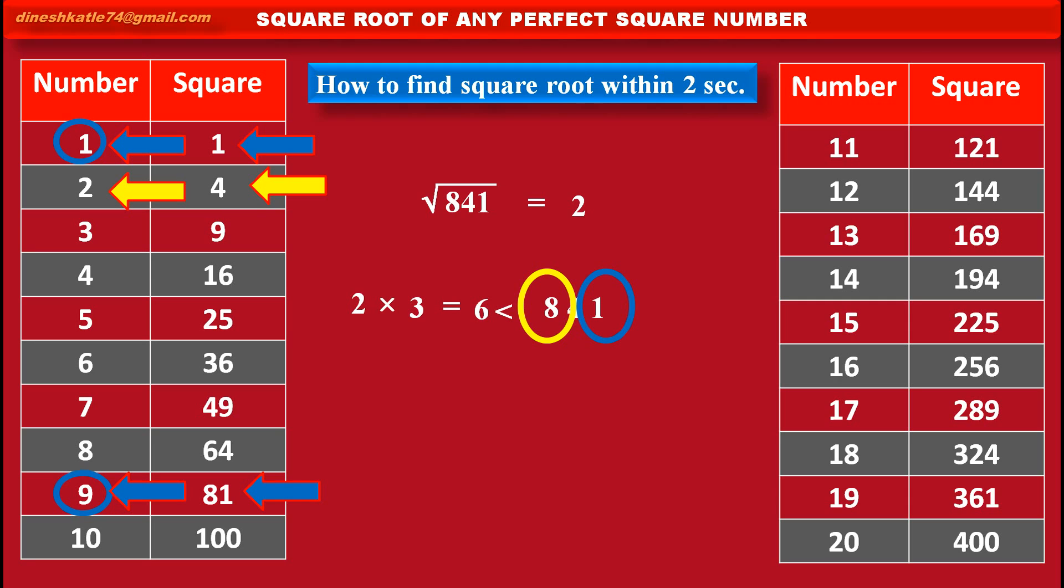That means our first digit 8 of the given number is greater than product 6. So, we have to select greater option which is 9, so the second digit of the answer is 9. That is why the square root of the given number 841 is 29.